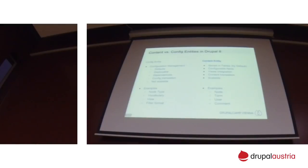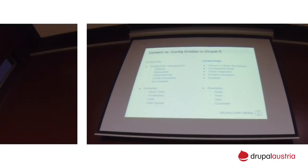So as Christoph mentioned, there are two types of entities in Drupal 8: content entities and config entities. They both share the same basic system and the same basic APIs, but the way they are stored and they work is quite different. Config entities build on top of the configuration system in Drupal 8, which means they can be exported, you can provide default configuration in your module, and there's a dependency system so that different configs know what needs to be installed first.